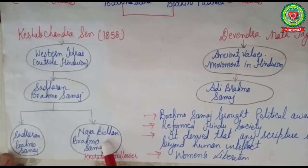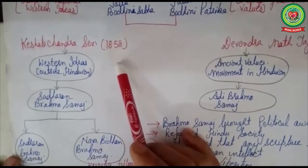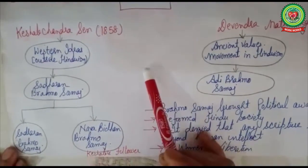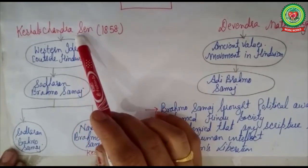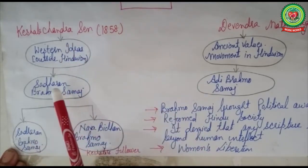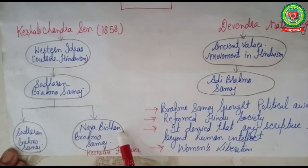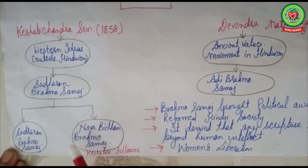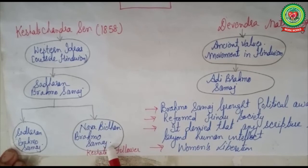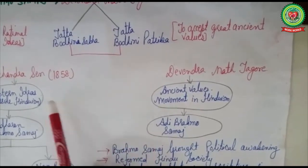There was a controversy because Keshab Chandra Sen, who was against child marriage, married his 13-year-old daughter to a rich zamindar. Due to this, the Sadharan Brahmo Samaj split further — those who remained loyal formed one faction retaining the name Sadharan Brahmo Samaj, while Keshab Chandra Sen's followers formed a separate sect called Nava Vidhan Brahmo Samaj.